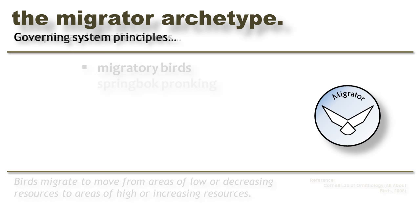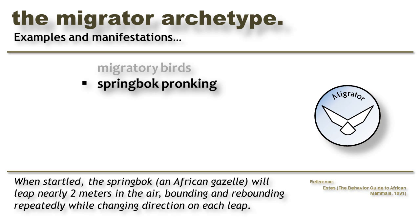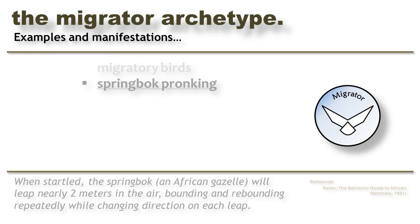Migrator behavior can be observed in migratory birds, which travel from areas of low or decreasing resources to areas of high or increasing resources. It may also be seen in animals that follow dramatic paths to escape from predators. An example of this is the springbok, an African gazelle that leaps almost two meters in the air, changing direction on every leap to elude predators.